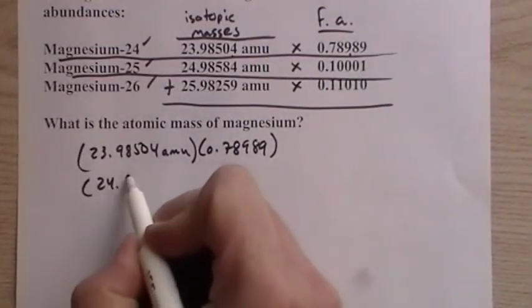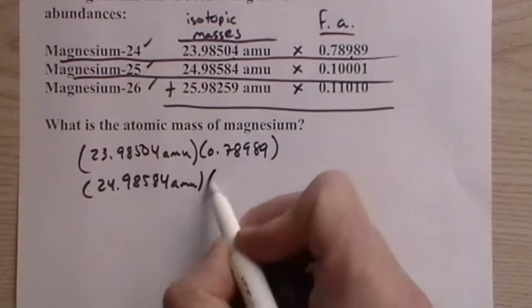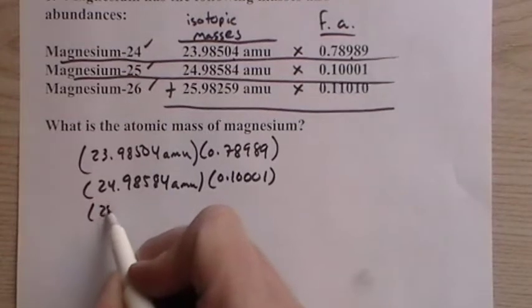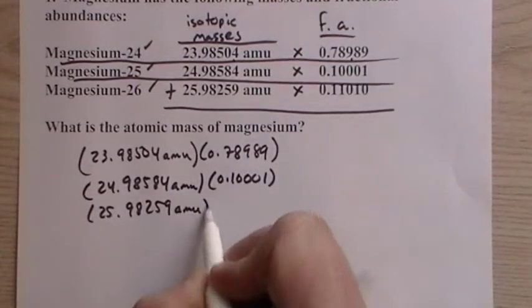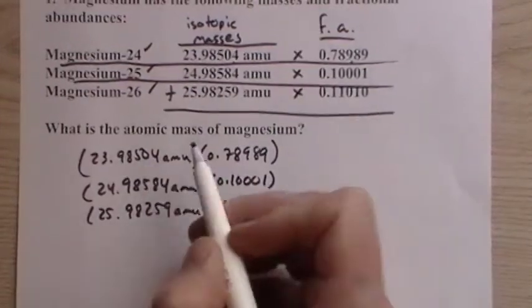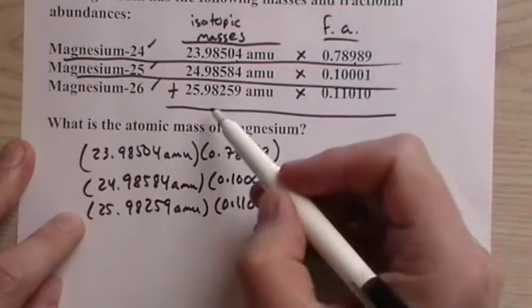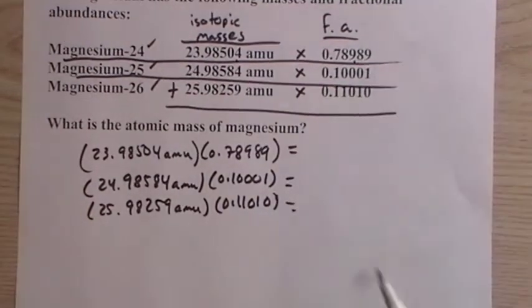And then 24.98584 AMU. And I'm doing it quickly, I'll double check to make sure if I'm putting the wrong numbers in here, but let me just get them down here first. 0.11010, so 29, looks right. Got to be careful because there's so many digits here.